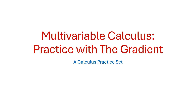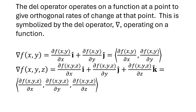This is a practice set that involves the gradient. There's a little review. The del operator operates on a function at a point to give orthogonal rates of change at that point. It can be two-dimensional or three-dimensional. This is symbolized by the del operator, which is an upside-down triangle operating on a function. The del operator is one of three operations we can apply with it on a function or a vector — this is the one that operates on a function, and its output is a vector.